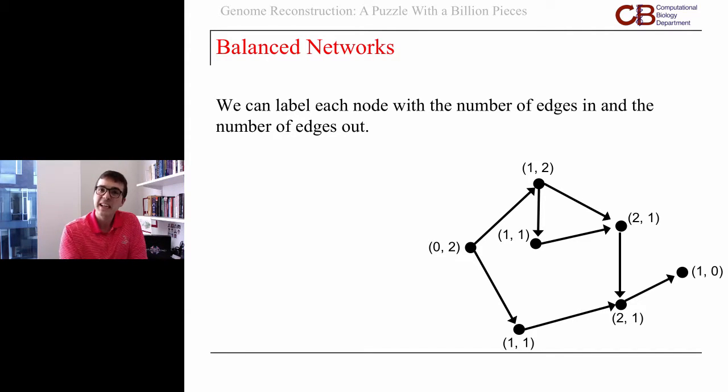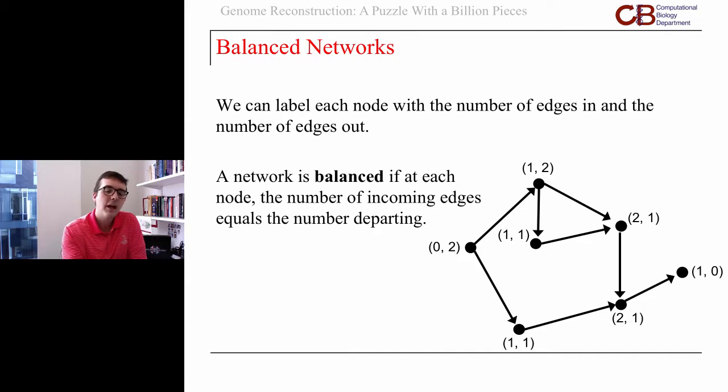We can label each node with the number of edges in and the number of edges out. We'll say a network is balanced if at every single node, the number of edges in is equal to the number of edges departing.